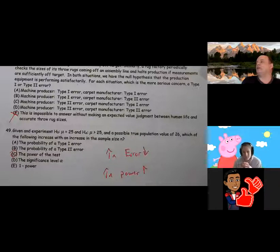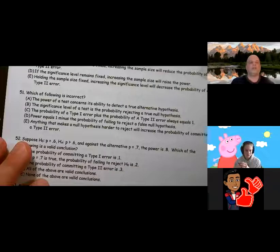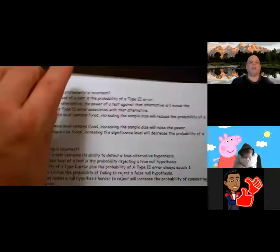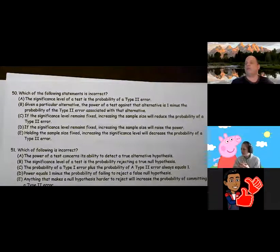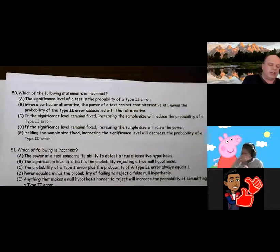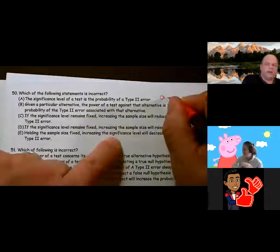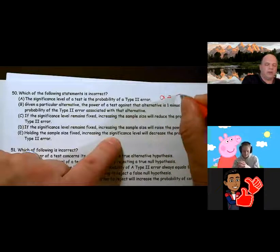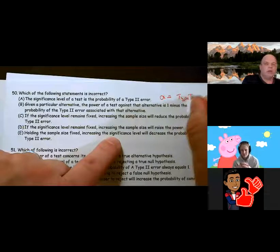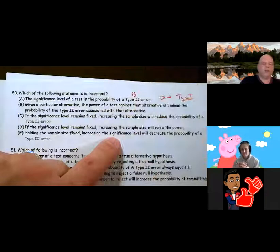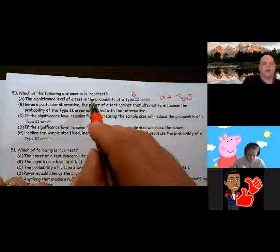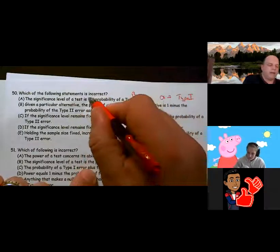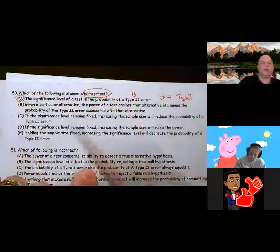Okay. Question number 50. Which of the following statements is incorrect? The significance level of a test is a probability of a Type 2 error. Significance level is alpha. All right? And alpha is Type 1. Type 2 is beta. All right? So alpha is Type 1. Type 2 is beta. So significance level is Type 1. And they said incorrect. So that's A.